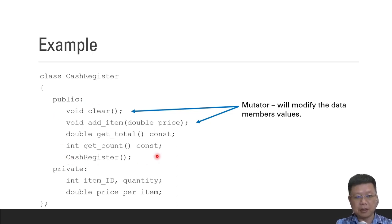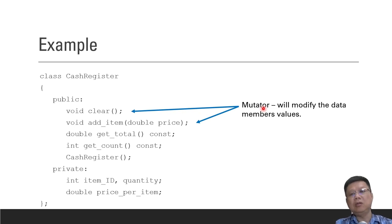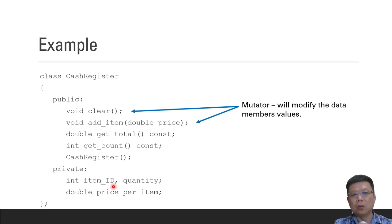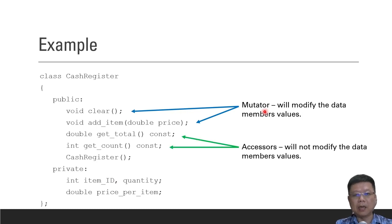There are three types of functions. One is called a mutator. A mutator means that we are going to modify the value. For example, the original item ID value is 0 — we get input and then modify it. That is what we call a mutator.